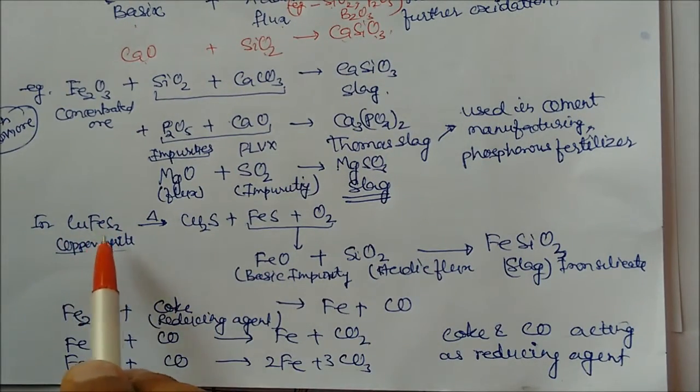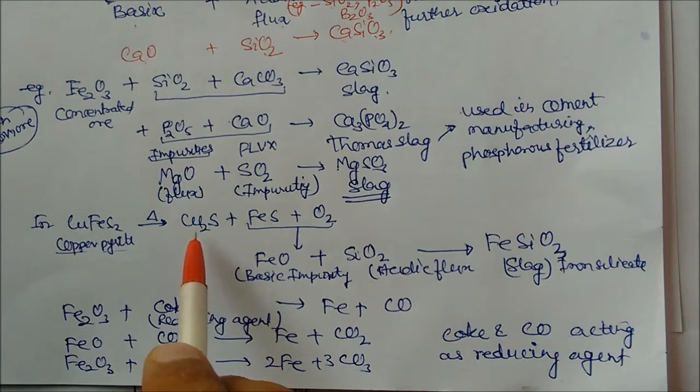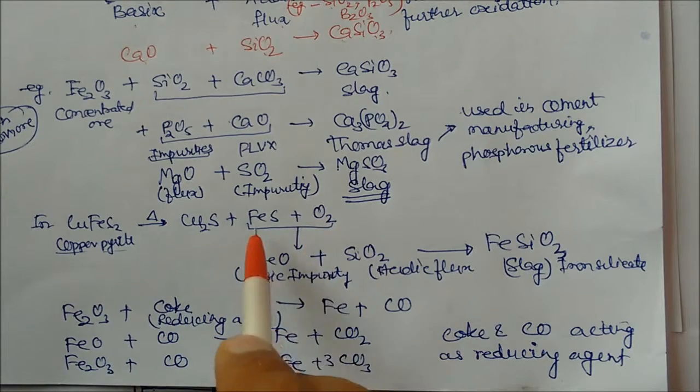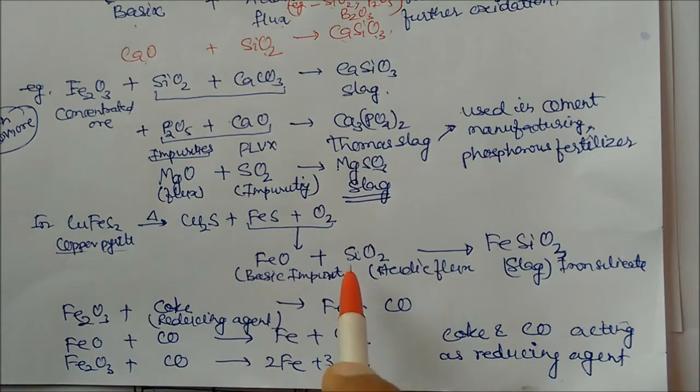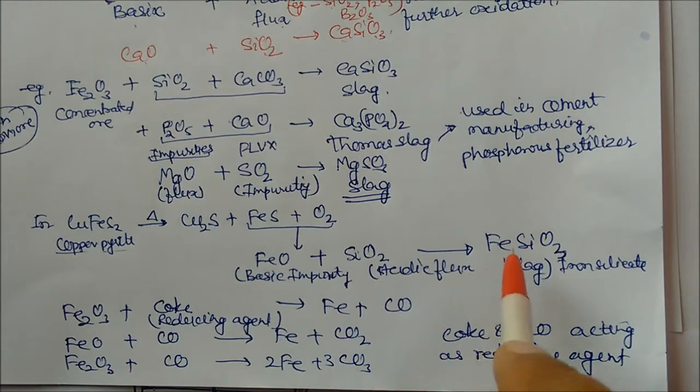In copper pyrites, CuFeS2, if you heat it, you will get Cu2S, FeS and O2. Again, FeS plus O2, they will combine and they will give you FeO. This is the basic impurities. To remove this impurities, we are adding SiO2. So this will give you FeSiO3, iron silicate.